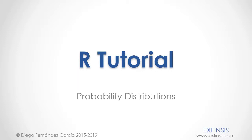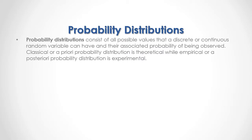Our tutorial: probability distributions. Probability distributions consist of all possible values that a discrete or continuous random variable can have and their associated probability of being observed. Classical or a priori probability distribution is theoretical, while empirical or a posteriori probability distribution is experimental.